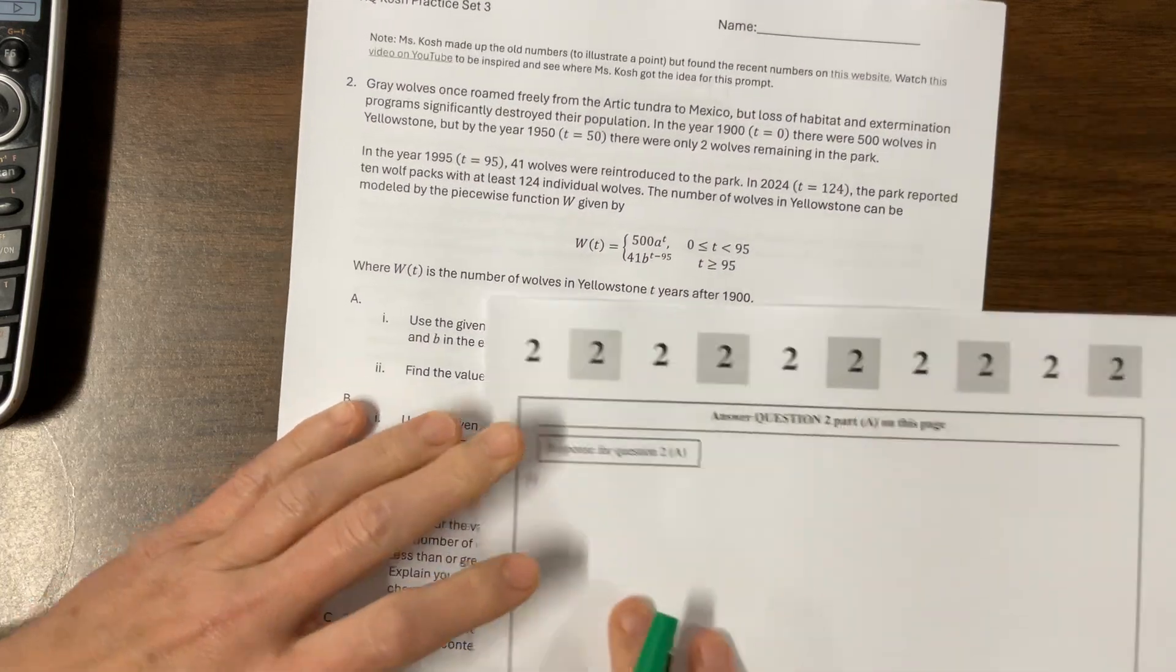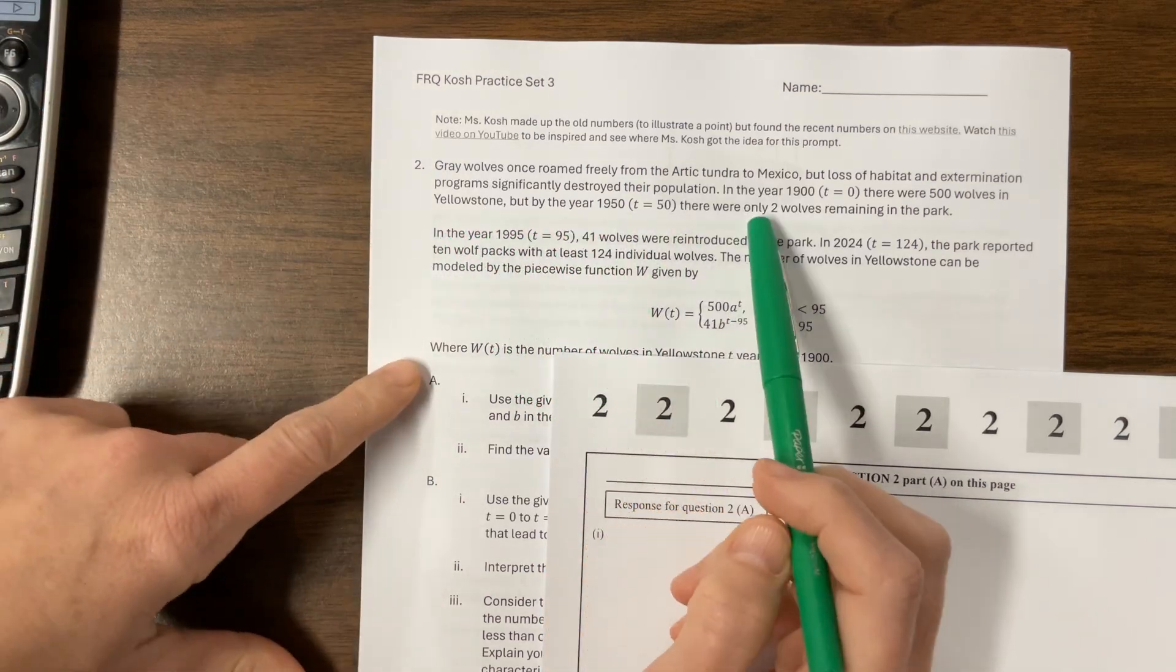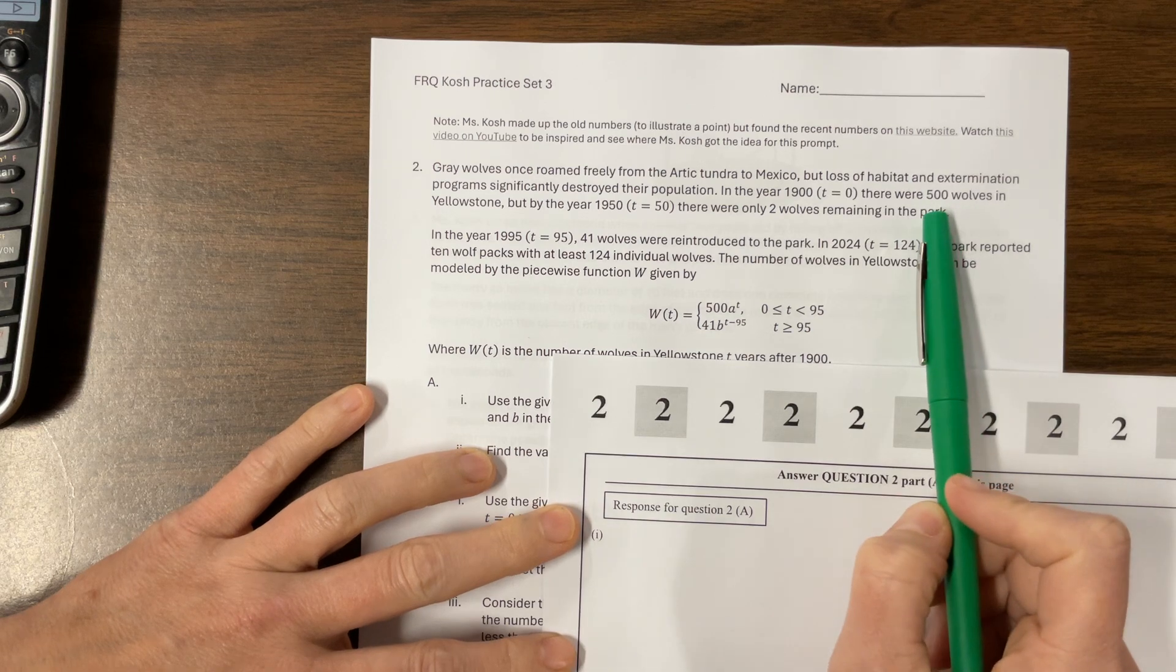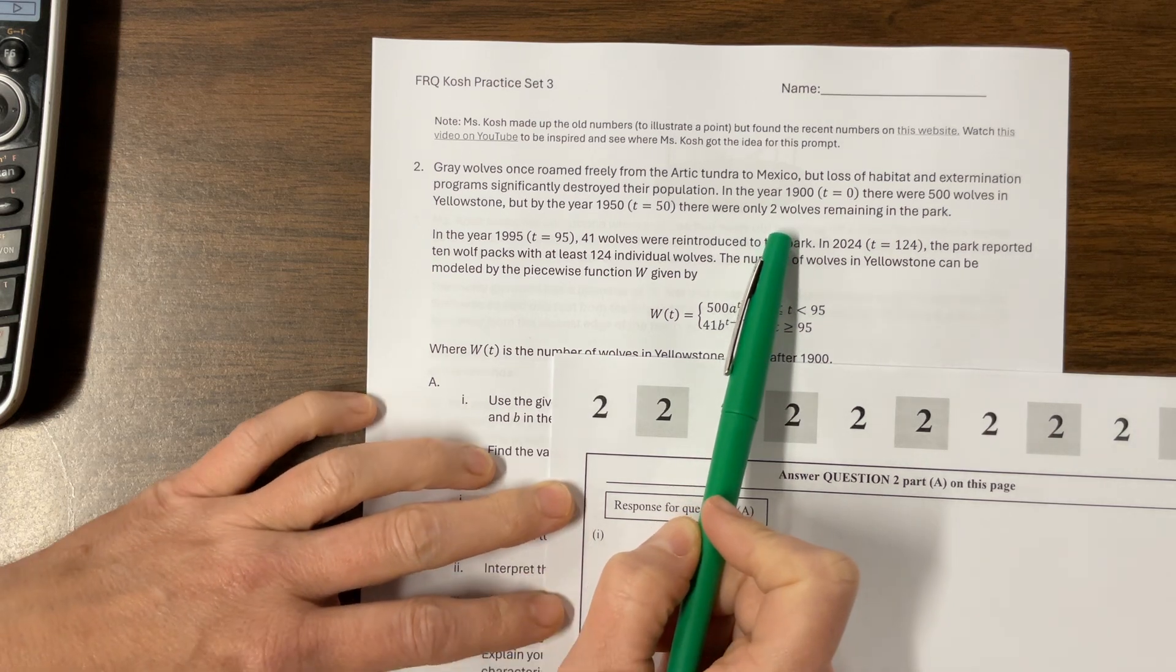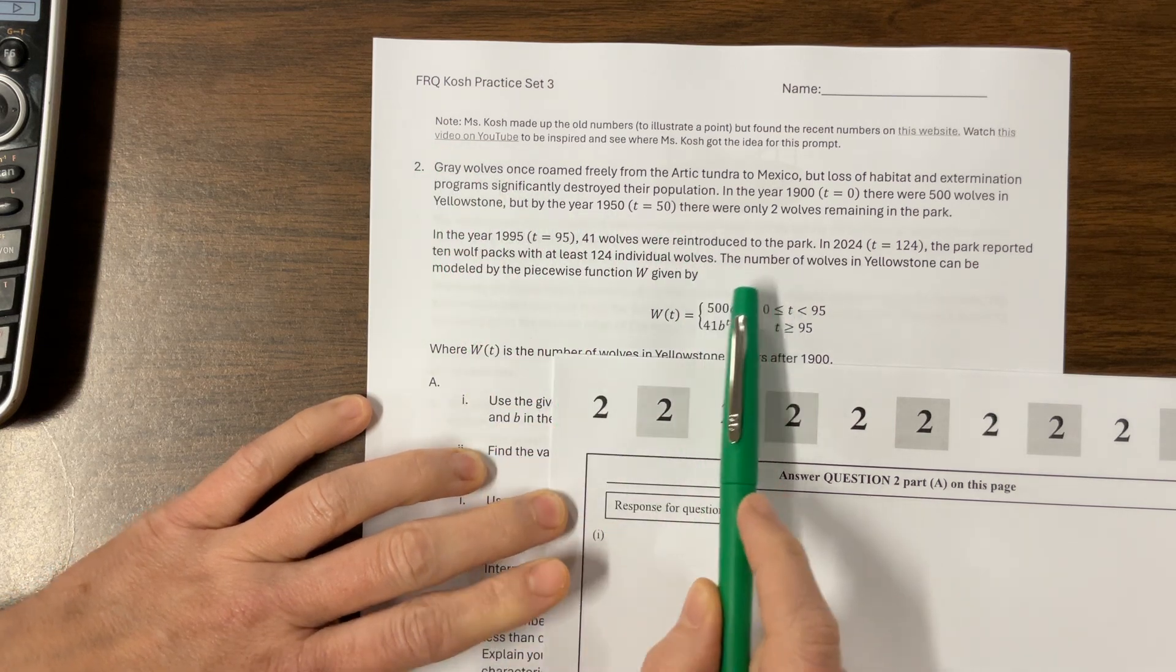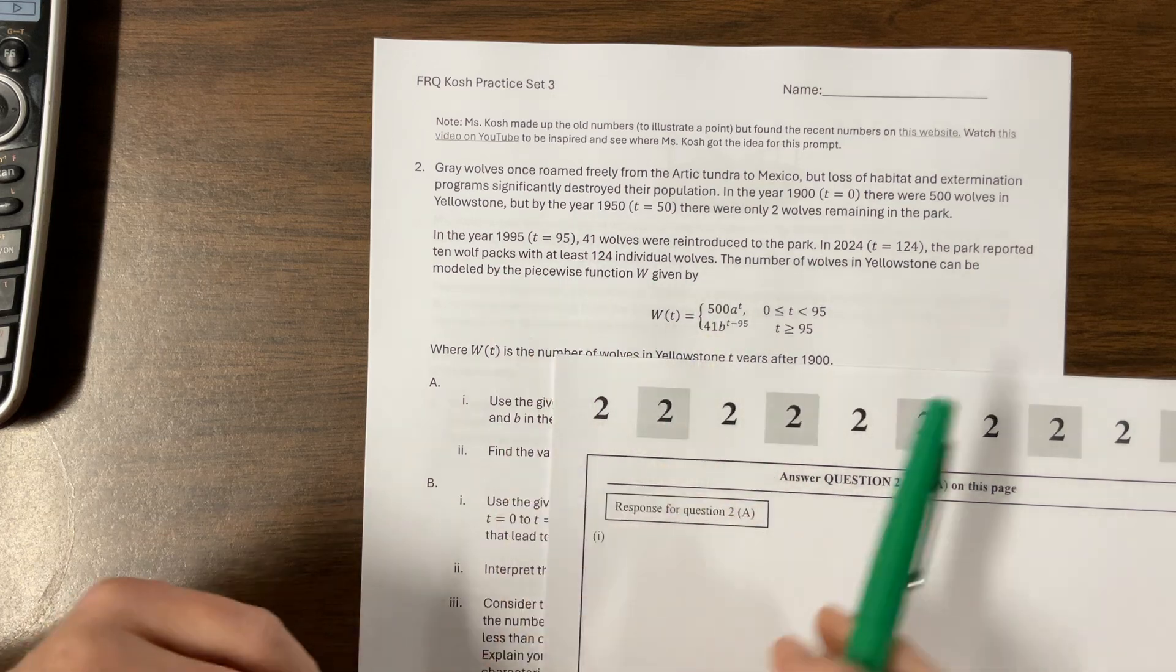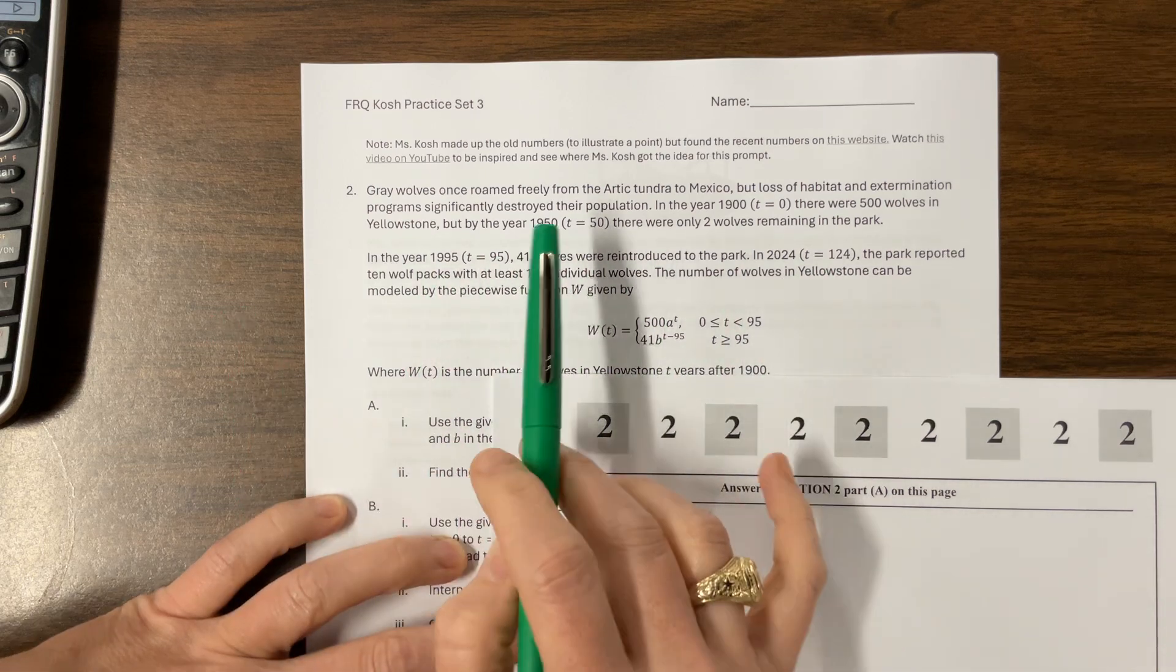Okay, so it tells us gray wolves once roamed freely from the Arctic tundra to Mexico, but lost habitat destroyed their population. In the year 1900, now this part I actually made up, in the year 1900, where time equals zero, there were 500 wolves in Yellowstone, but by the year 1950, there were only two wolves. And actually, when I re-watched this video, I didn't watch it before I wrote the problem, when they reintroduced wolves in 1995, there hadn't been wolves in Yellowstone for 70 years, so the first part of my problem is a little off, but the math will work, and we're just going to go with it. Okay, and so, but this is the true part.